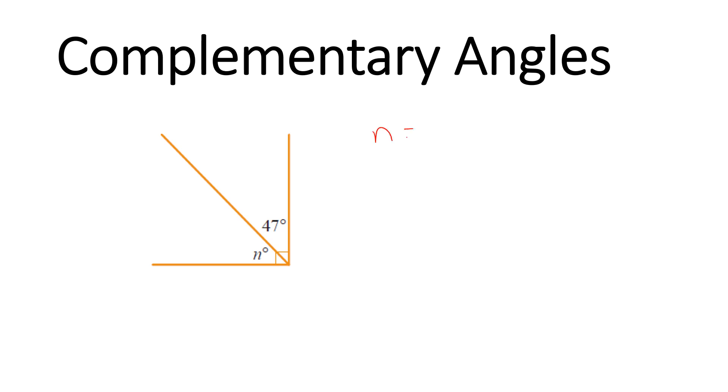So n will equal 90 minus the angle that we already know. And once again you can use your calculator for this. And 90 minus 47 is 43 degrees. So n equals 43 degrees.